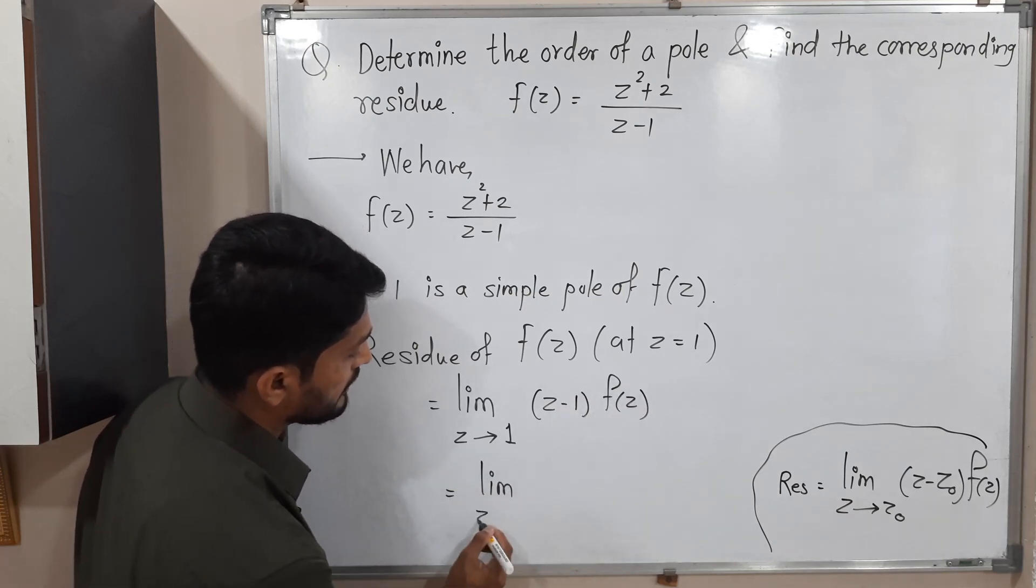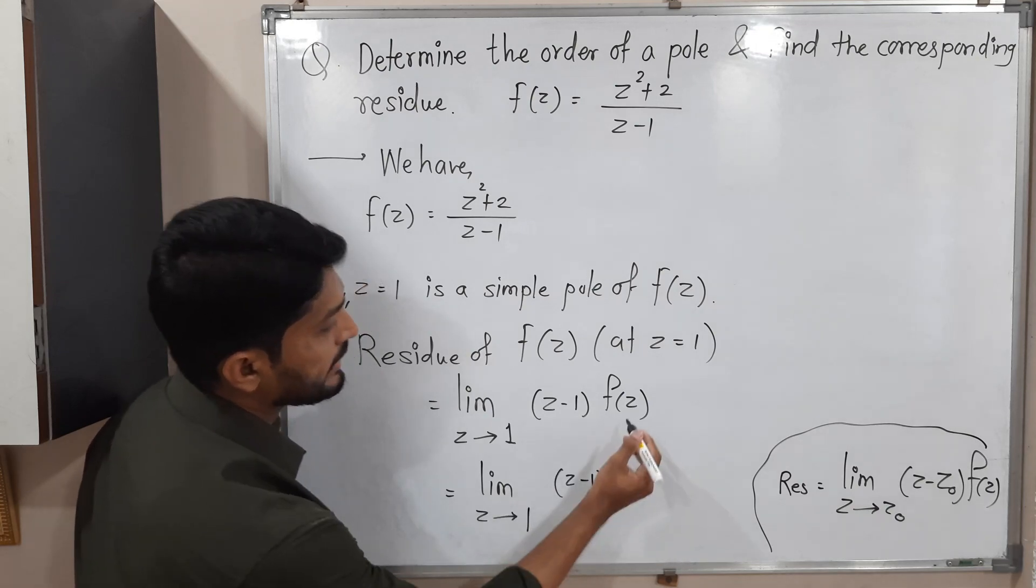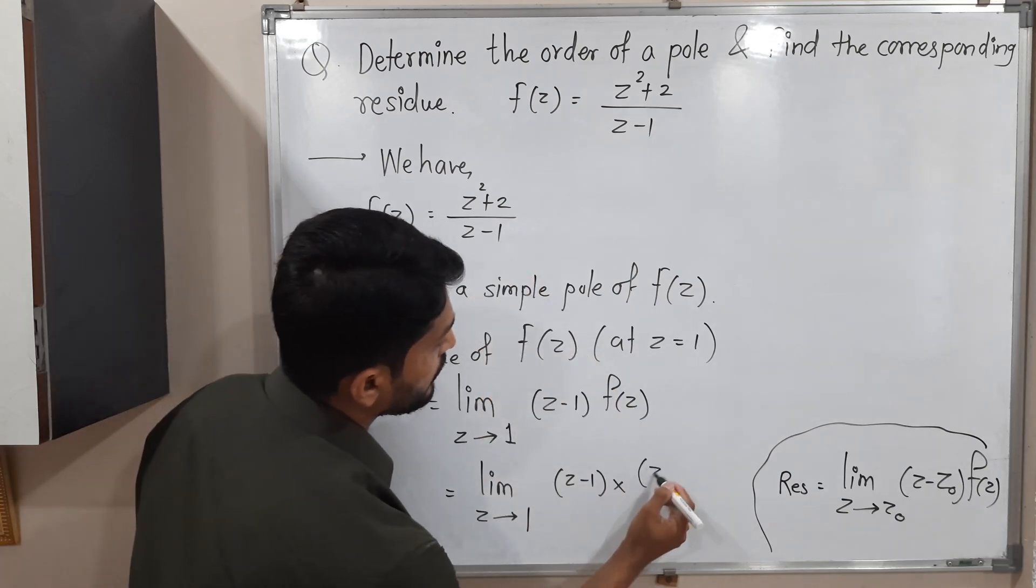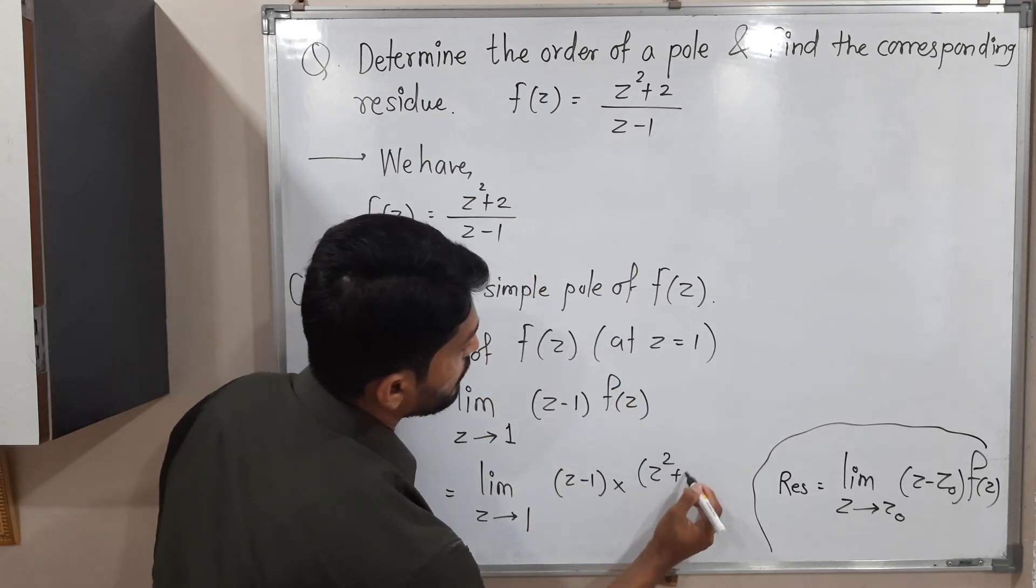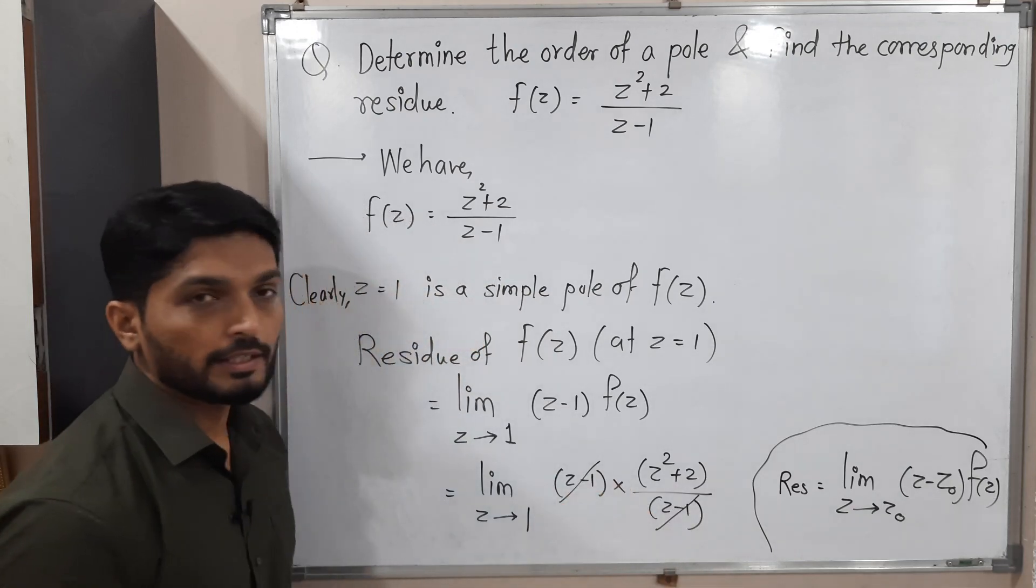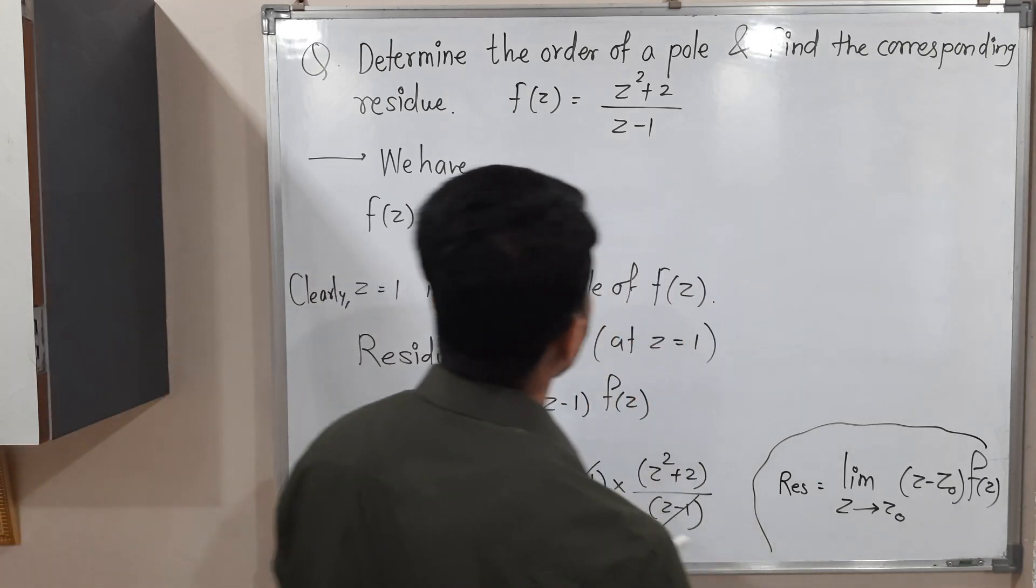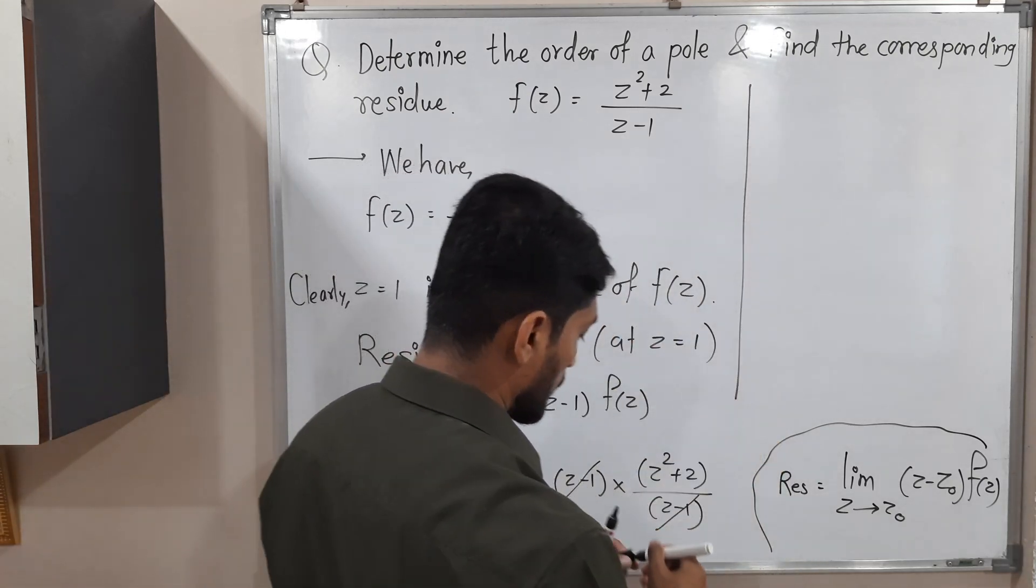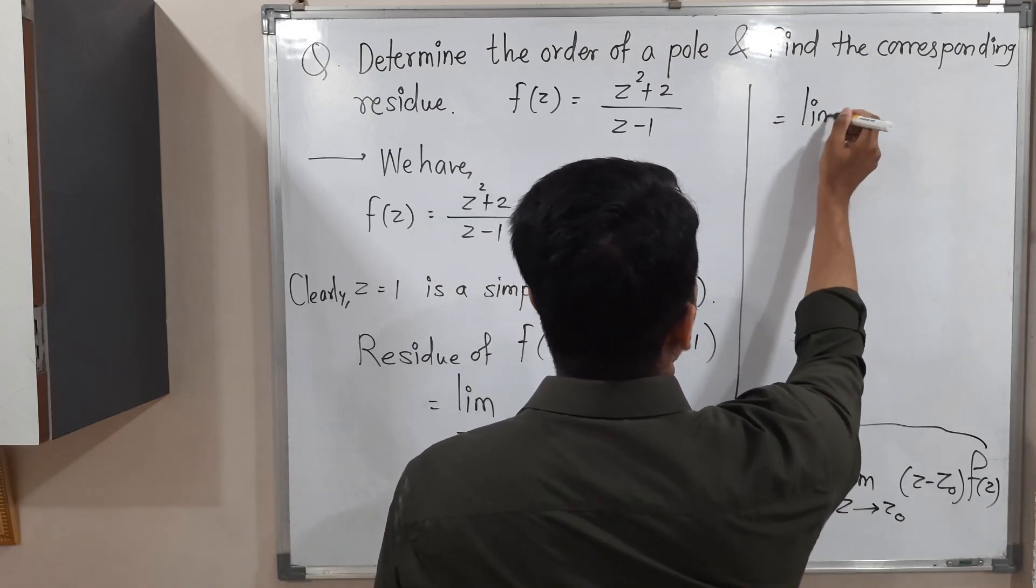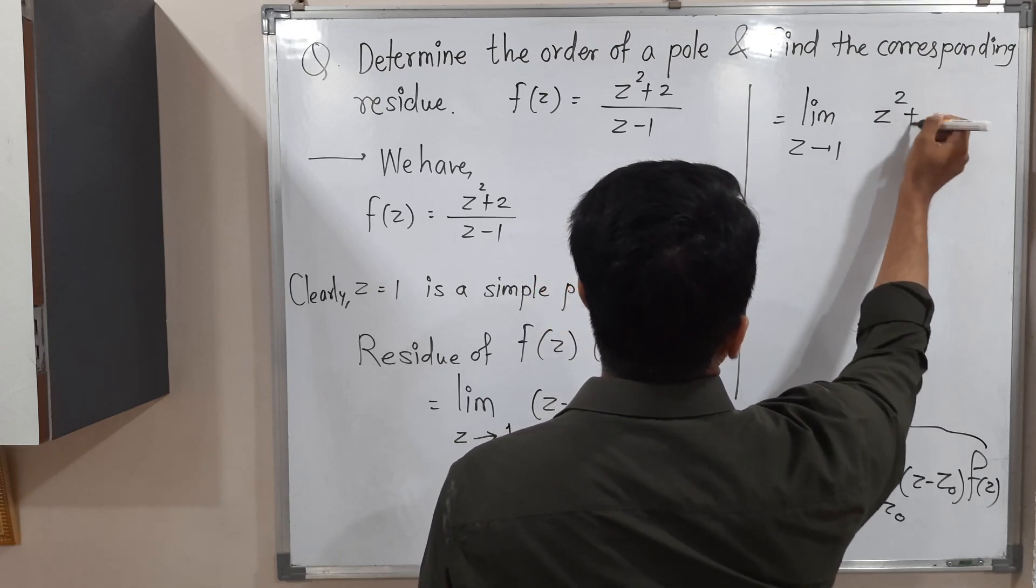Will you guess the next step? Obviously, I am going to put the value of f(z). Let us put (z² + 2)/(z - 1). So (z - 1)(z - 1) will get cancelled. What is the remaining part? lim(z→1) (z² + 2).